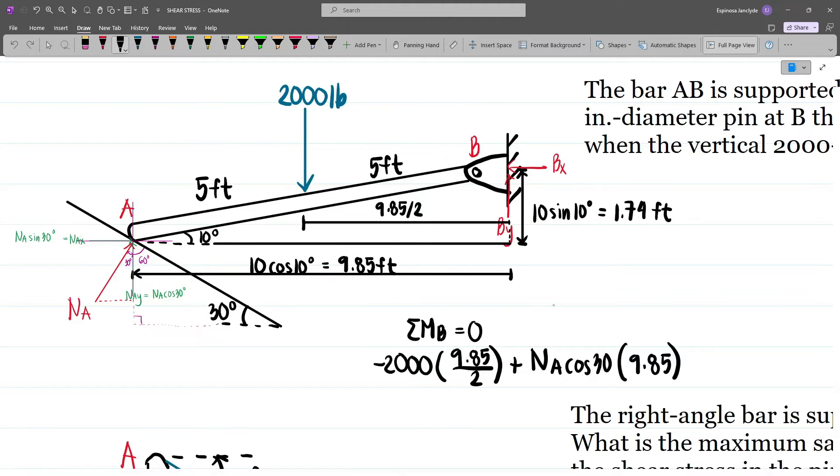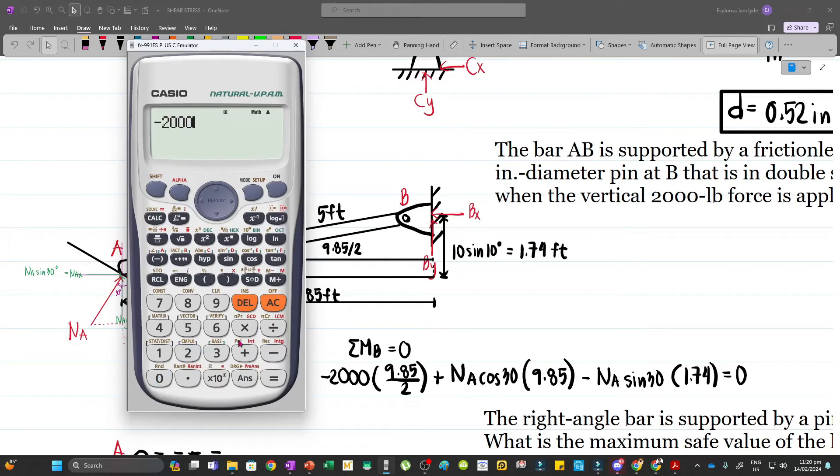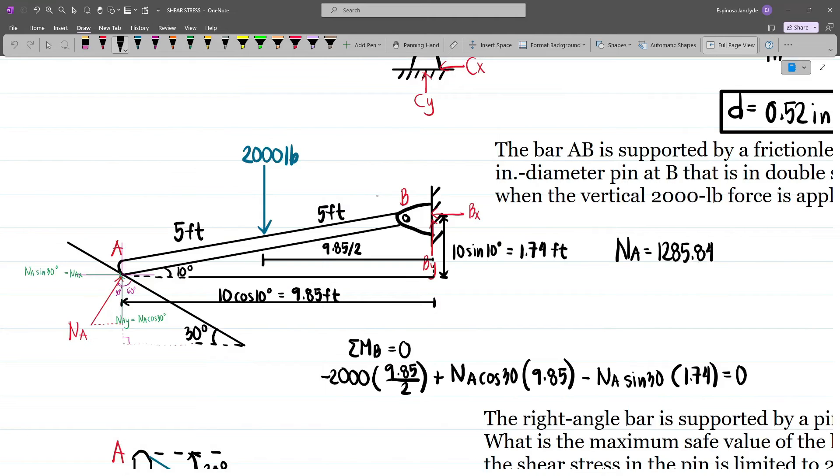And then we have minus NaX times 1.74 which is Na sin 30 times 1.74. And so now we can solve Na: minus 2000 times 9.85 over 2 plus Na cos 30 times 9.85 minus Na sin 30 times 1.74 equals 0. And so our Na will be 1285.84 pounds.